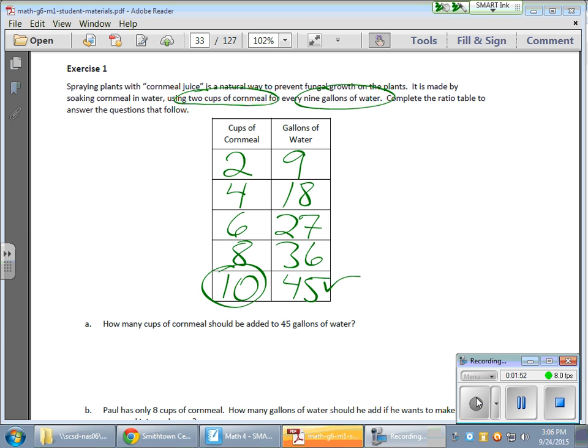The second question, which you really can't see here, but I'm just going to read it for you. The second question talks about Paul. He only has eight cups of cornmeal. How many gallons of water should he add if he wants to make as much cornmeal juice as he can?